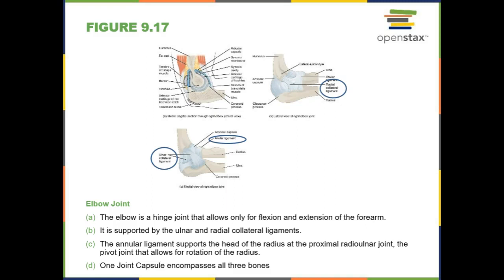Because the humeral head sits in such a shallow joint cavity and has so much movement, it is very unstable and is the most likely joint to pop out of place. We'll talk about some of the disorders associated with these joints towards the end of this chapter.